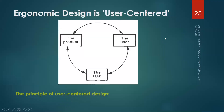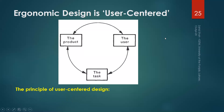Ergonomic design is user-centered. You have to consider three aspects in ergonomic design: the user, the product — or it could be other than the product, it could be a workplace, it could be information as well — and the task that is to be performed. So all three of these have to be considered.